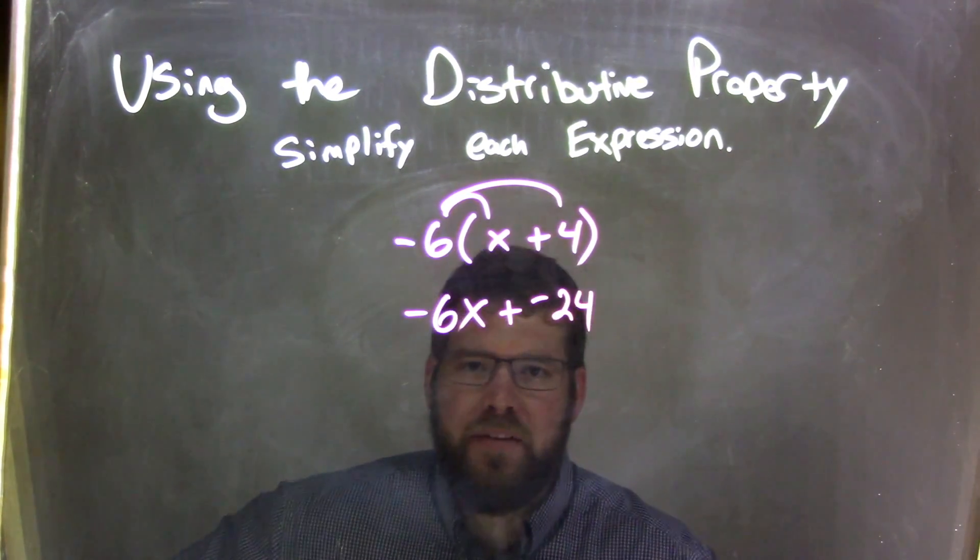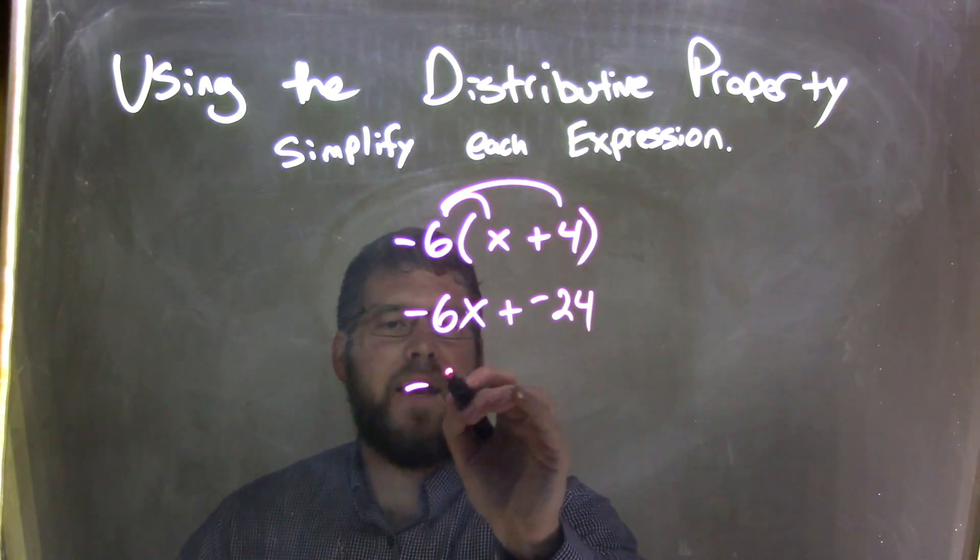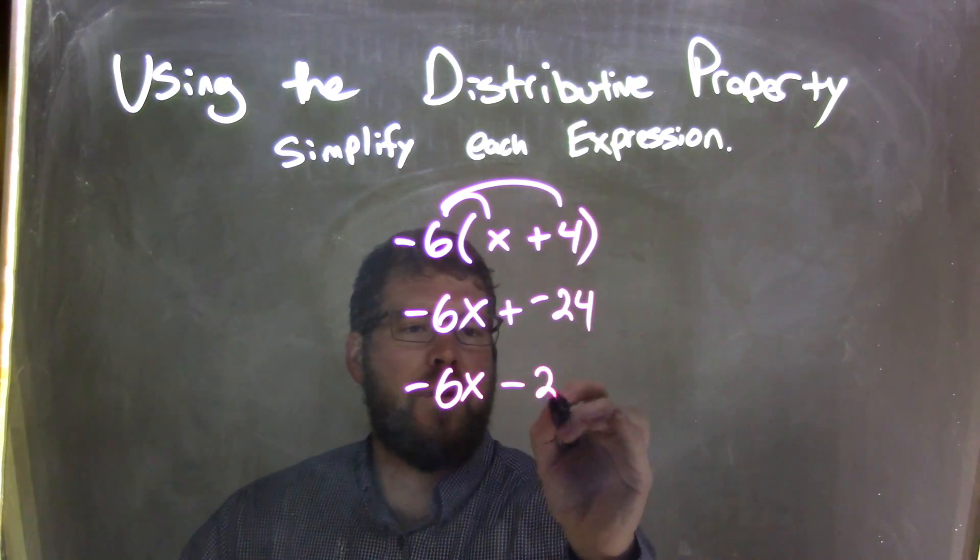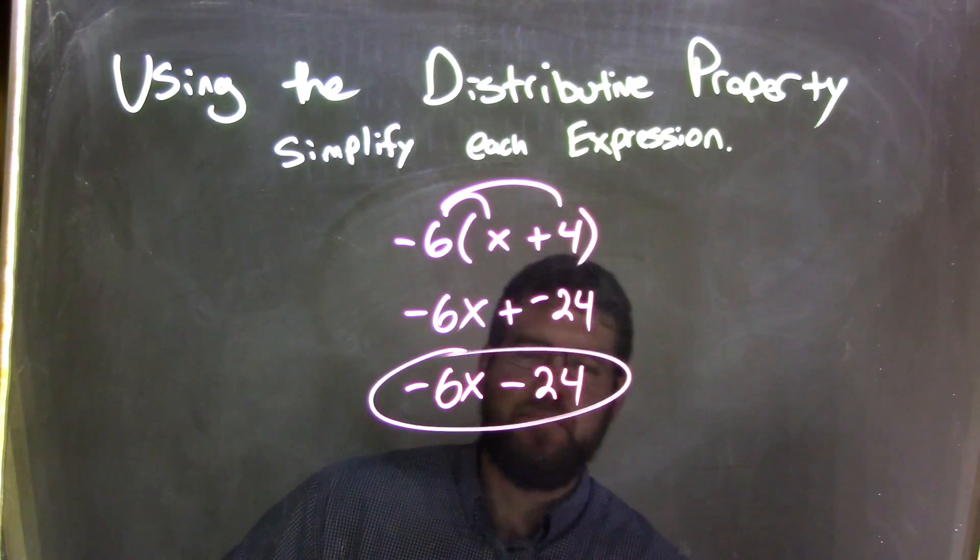Now, we want to write this cleanly. To write it cleanly, adding a negative is the same thing as subtraction, so negative 6x minus 24 would be my final answer. They're not like terms, we can't combine them.